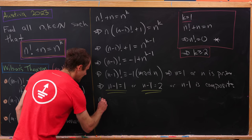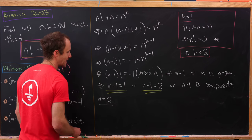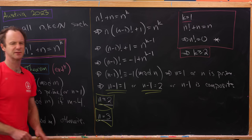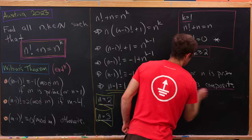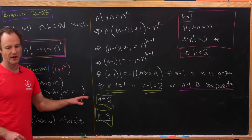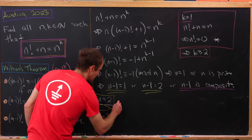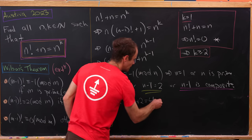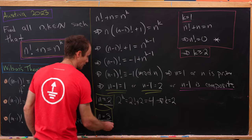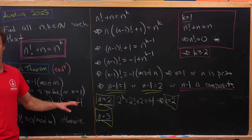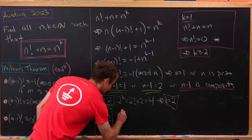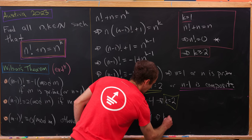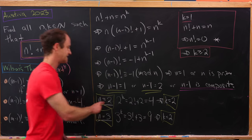If n-1 = 1, then n = 2: plugging in gives 2^k = 2! + 2 = 4, so k = 2. That's a solution: n=2, k=2. If n-1 = 2, then n = 3: 3^k = 3! + 3 = 9, so k = 2. Another solution: n=3, k=2.